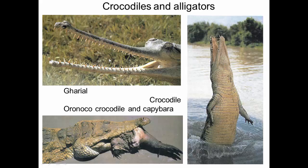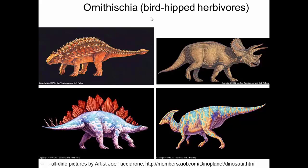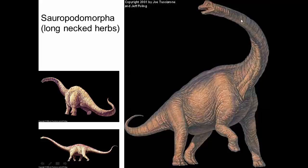Crocodiles and alligators are the outgroup of the rest of Archosauria, which includes dinosaurs. There are three major groups of dinosaurs. The ornithischian dinosaurs are referred to as bird-hipped herbivores — they're all herbivores. Although they're called bird-hipped, this is not the group birds evolved from. This is where most of your non-sauropod-looking herbivores are, like Stegosaurus and Ankylosaurus. Sauropodomorpha are the long-necked herbivores — Apatosaurus, Diplodocus — the big ones from Jurassic Park.